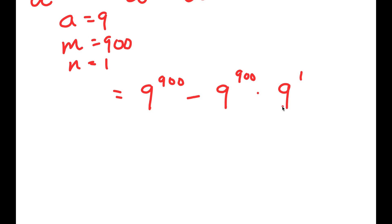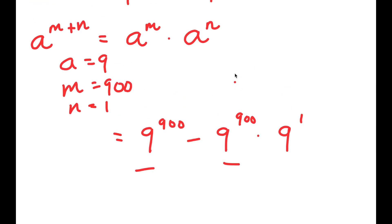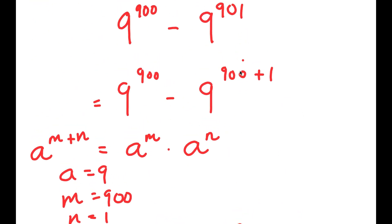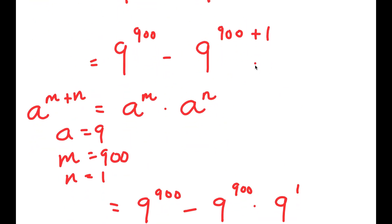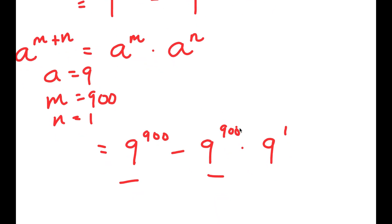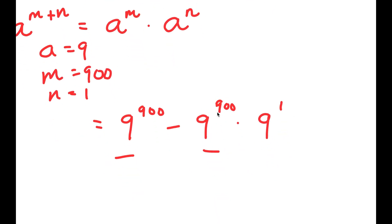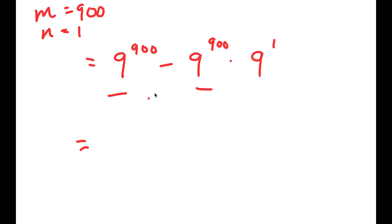The reason we did this is so that both of these terms can have 9 to the power of 900 in them. We rewrote 9 to the power of 901 as 9 to the power of 900 times 9 to the power of 1, which results in it having 9 to the power of 900 in the term. Now, because both terms have 9 to the power of 900, I can factor it out.